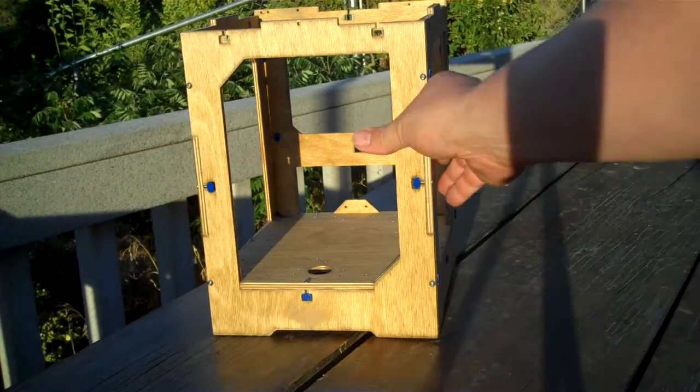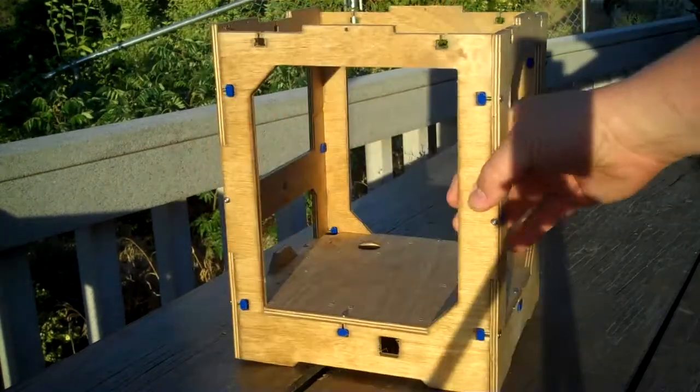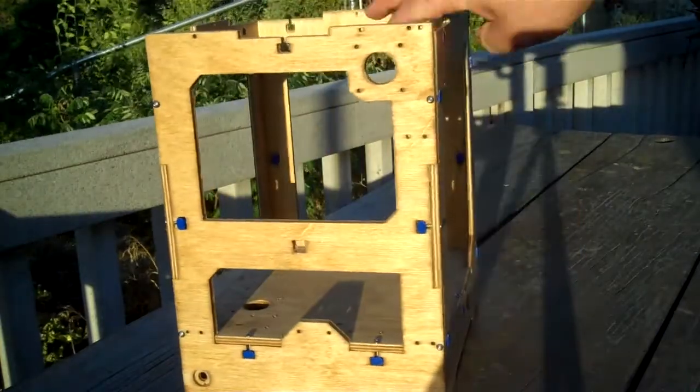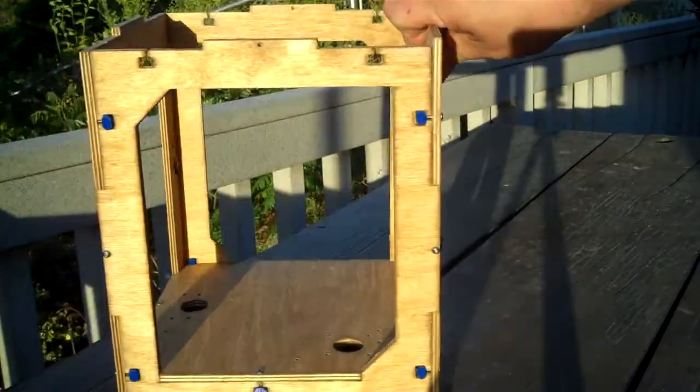I'm going to start off by showing you where we should end up. There you can see the front of the printer, the left side with the USB, the back, and the right side.